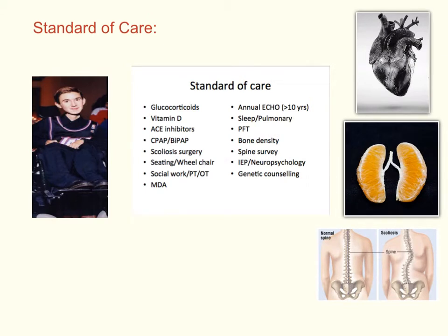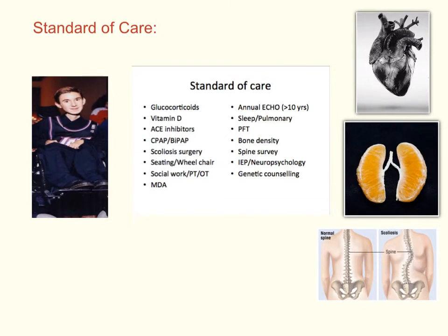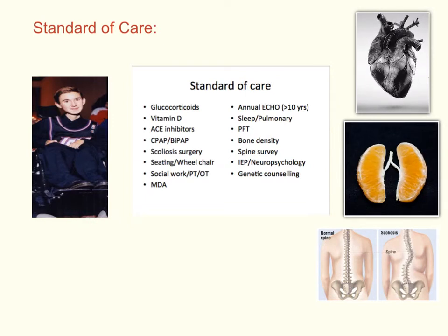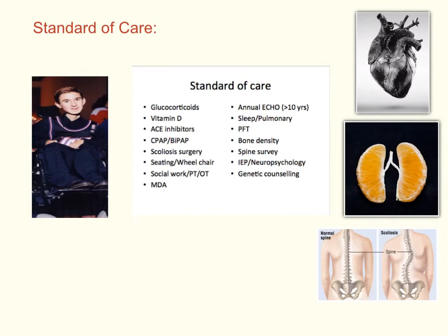Patient X needs to constantly monitor for heart and respiratory problems, as well as scoliosis, as muscle degradation from the disease tends to impact the heart, lungs, and spinal cord. Standard medications include glucocorticoids, vitamin D, and ACE inhibitors. A BiPAP machine is typically needed so the patient can breathe while sleeping, and a wheelchair is typically needed for mobility. It is important that the patient has social support and undergoes physical therapy to live a standard lifestyle, and he should regularly follow up at the MDA clinic so his disease can be monitored.